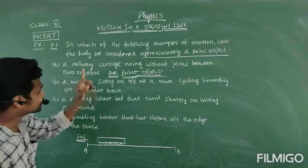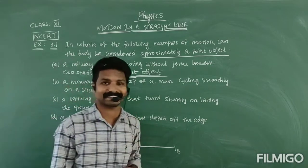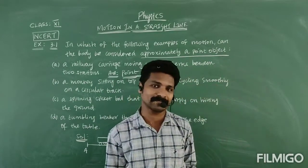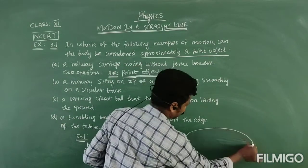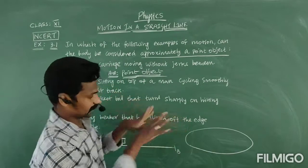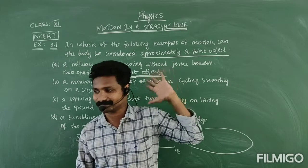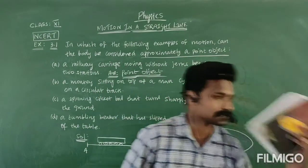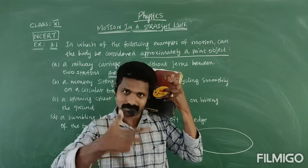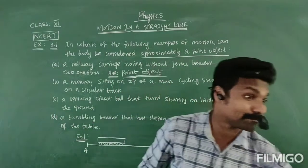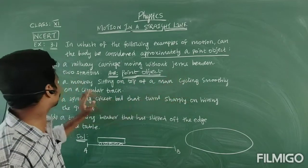The next question: a monkey sitting on top of a man cycling smoothly on a circular track. A track means minimum 200, 500, 800 meters. Now you have to observe the whole track. One person is cycling, and one monkey is standing on the person. If you observe directly, close to that person, the monkey is not considered a point object. But that is not the situation here. The monkey is sitting on top of a man cycling smoothly on a circular track — you should observe the whole circular track.